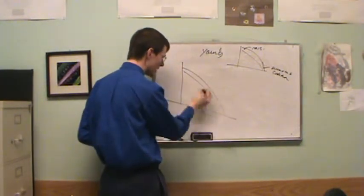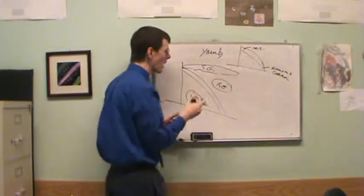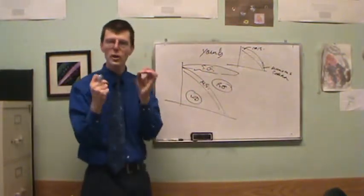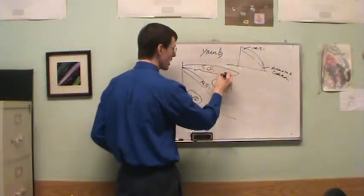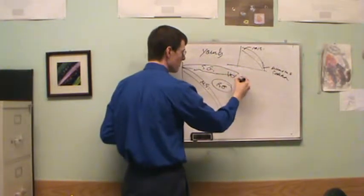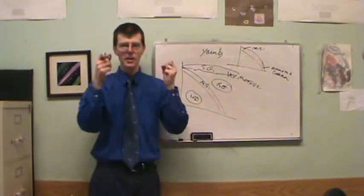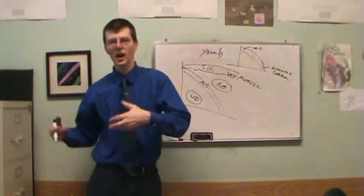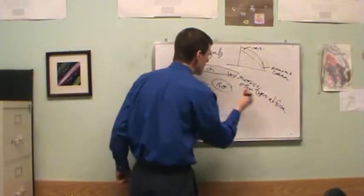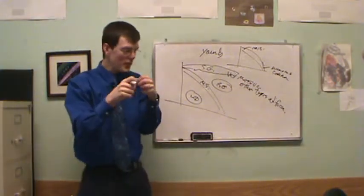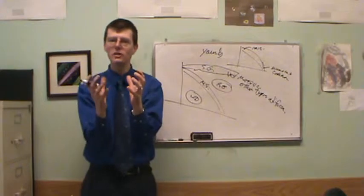Looking at the rest of the HR diagram — white dwarf stars, red giant stars, supergiant stars — the main sequence is where stars are doing hydrogen-to-helium fusion in their cores; other regions are not doing that. The supergiant stars turn out to be very massive stars that have finished their hydrogen and are now burning helium into heavier elements like neon and silicon.